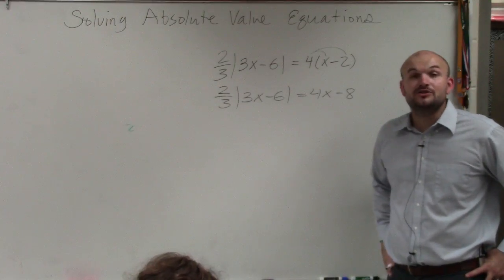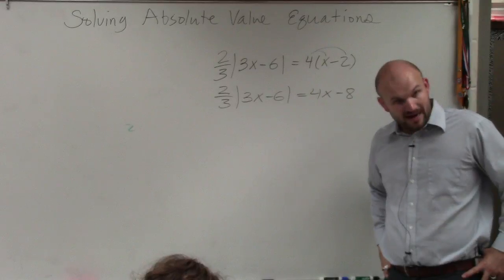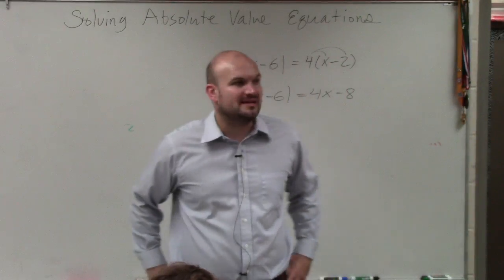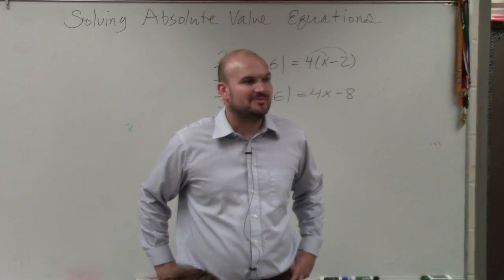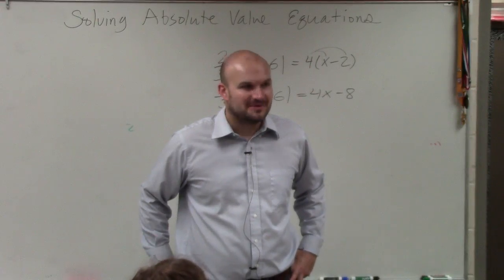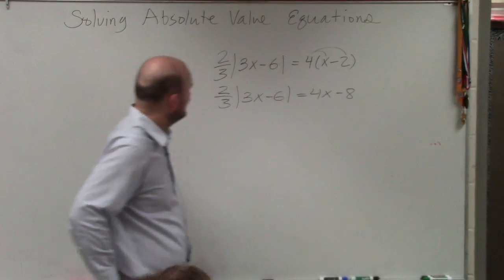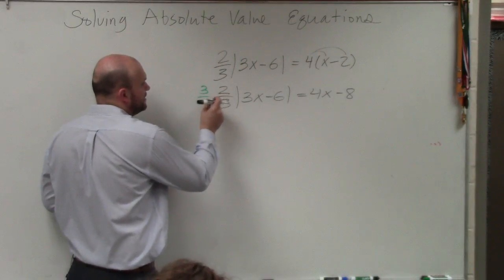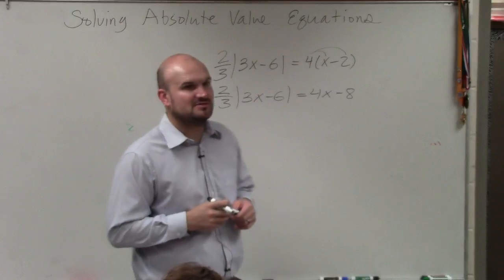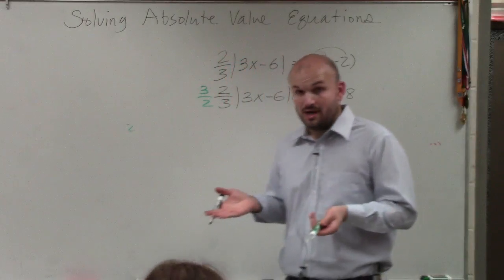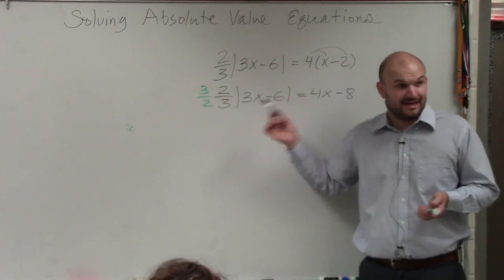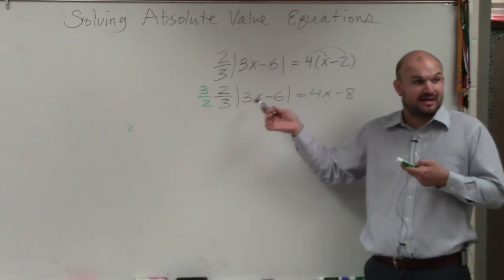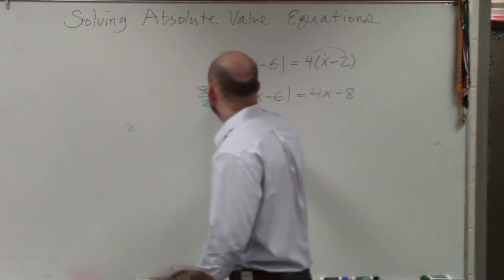So to undo multiplication, we can divide, right? But dividing fractions is the same thing as multiplying by the reciprocal. So any time you multiply by the reciprocal of a number, a number multiplied by its reciprocal always gives you 1. And 1 times anything is going to be that anything, right? 1 times the absolute value is going to leave you with that absolute value.